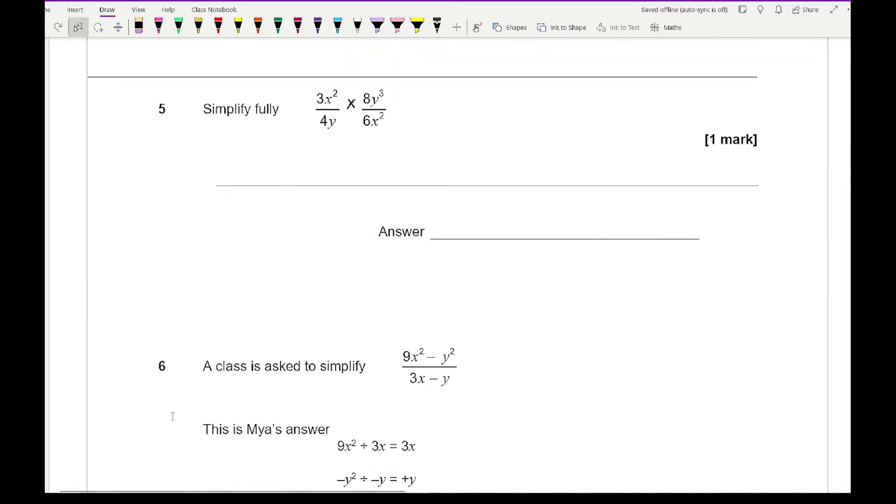Moving on to question five it says simplify fully. I've just got to multiply those. Remember we multiply numbers with numbers, letters with letters. That's going to be 24X squared Y cubed over 24X squared Y. Cancelling things down, the 24s cancel, the X squared cancels and the Y will cancel leaving me 2, so the final answer is Y squared.